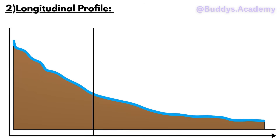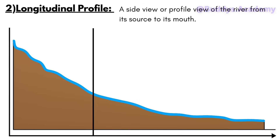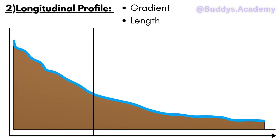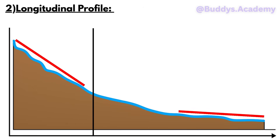Now as we get to your longitudinal profile, this is going to show us a side view or a profile view of the river from its source to its mouth. We're going to be able to see two things in this view: first, the gradient — remember, gradient is how steep a slope actually is — and we're going to see the length of the river. Take a quick look at the lines I drew: you can see how steep it's going to be in your upper course, and then take a look at your lower course — you can see how gentle that slope is going to be.